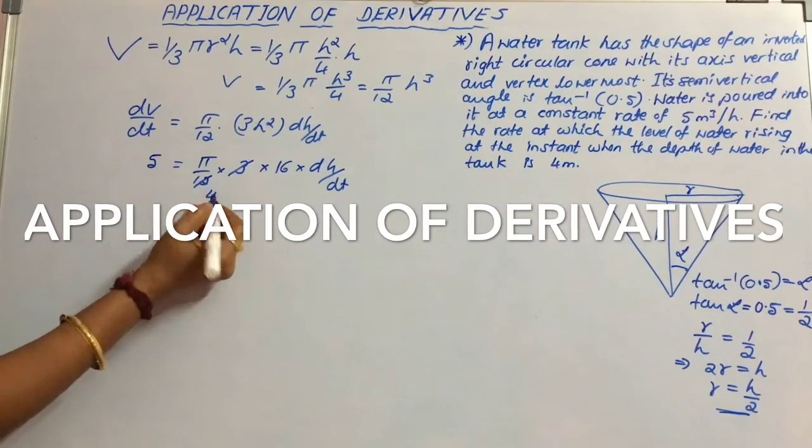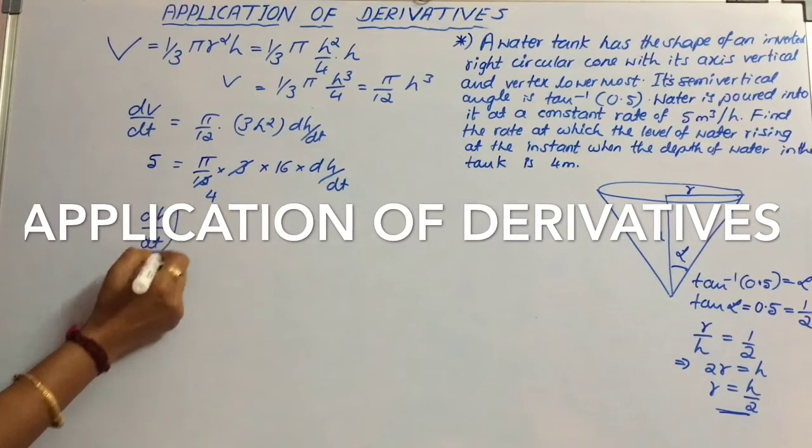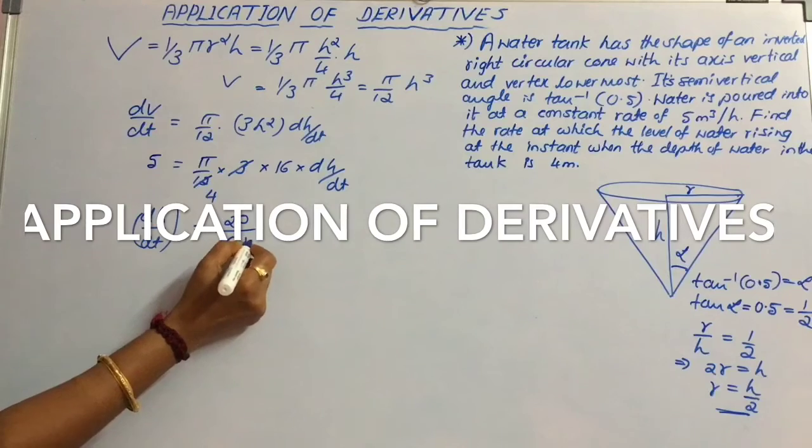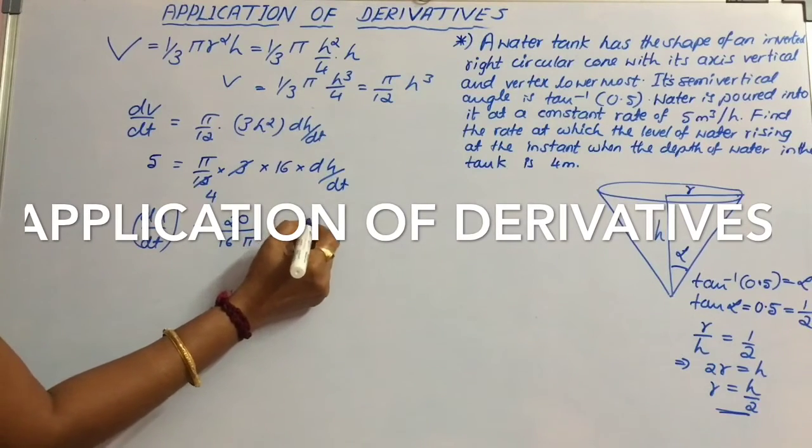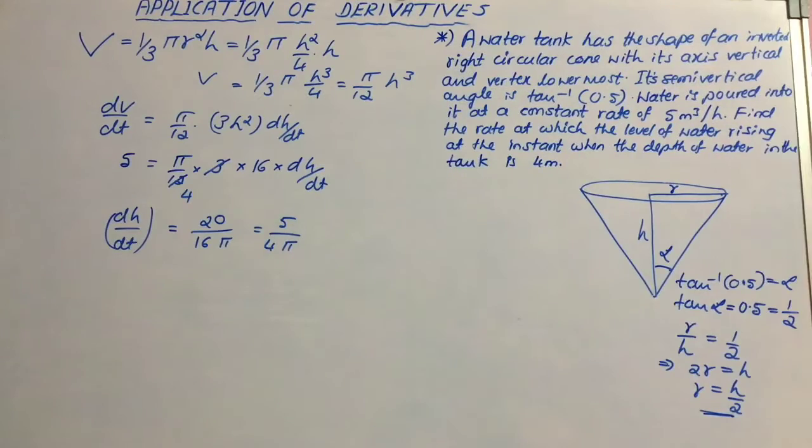we will get dh by dt equal to 20 by 16 pi, or 5 by 4 pi.